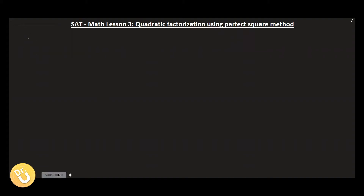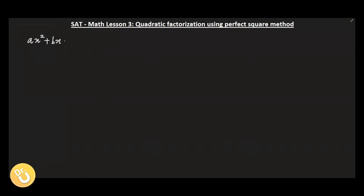Suppose we have a quadratic equation like ax² + bx + c. Now we have to represent this as a perfect square method. First of all, you take the a coefficient out, so then what you have is x² + (b/a)x + c/a.